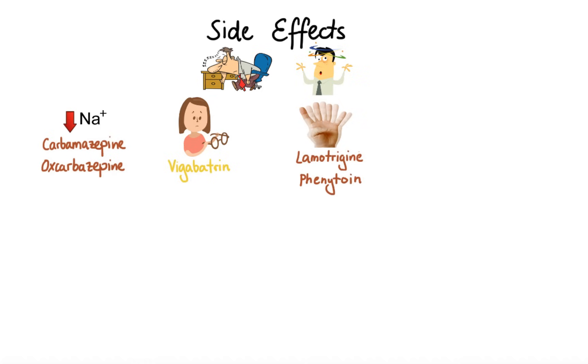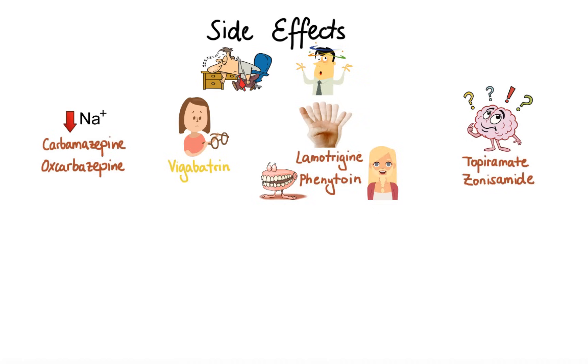Additionally, phenytoin is known for causing gingival hyperplasia and hirsutism. Cognitive problems can occur with the use of topiramate and zonisamide. Topiramate is also known for causing weight loss.